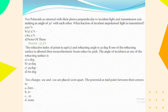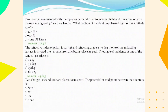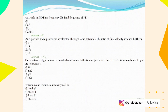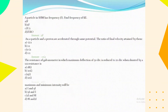The refractive index of a prism is √2 and the refracting angle is 30 degrees. If one of the refracting surfaces is silvered, a monochromatic beam retraces its path; the angle of incidence at one of the refracting surfaces is 45 degrees. Two charges of –10 C and +10 C are placed 10 cm apart; the potential at the midpoint between them is 0. A particle in SHM has frequency f; the frequency of its kinetic energy is 2f. An alpha particle and a proton are accelerated through the same potential; the ratio of final velocities attained is 1:√2. The resistance of a galvanometer in which maximum deflection is reduced from 50 divisions to 20 divisions when shunted by a 12 Ω resistance is 18 Ω.